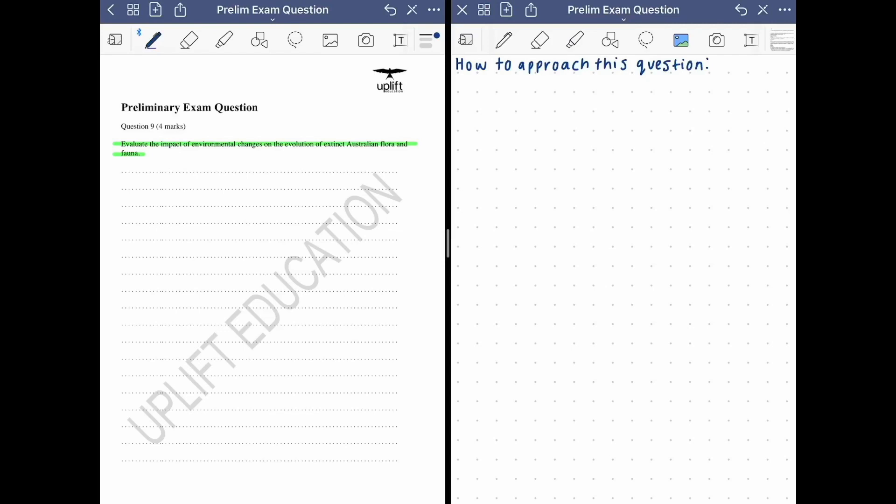So the question on the left hand side of my screen reads, evaluate the impact of environmental changes on the evolution of extinct Australian flora and fauna. Those of you who are familiar with the syllabus would have a general idea of where this comes from.